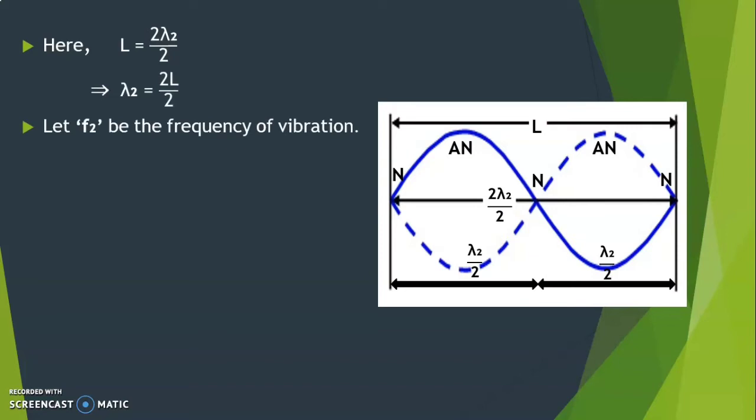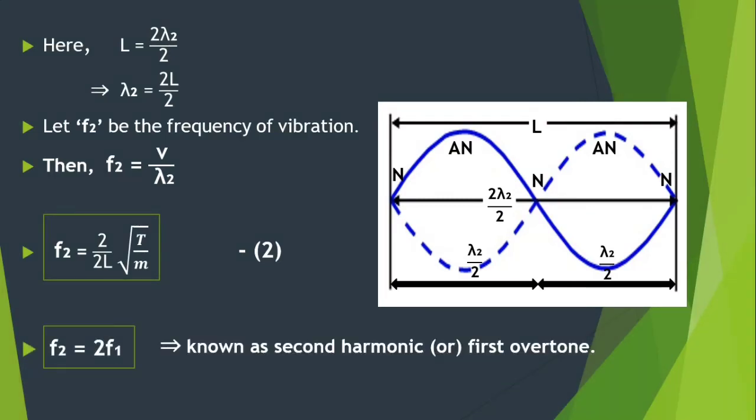Let f2 be the frequency of vibration. Then f2 equals v by lambda 2. Substituting the value of v and lambda 2, we get f2 equals 2 by 2L times root T by m, which is our second equation. This can also be written as f2 equals 2f1. This is known as second harmonic or first overtone.